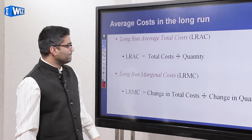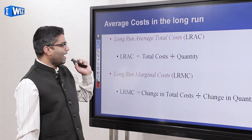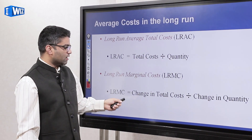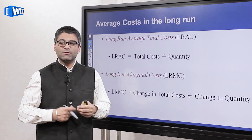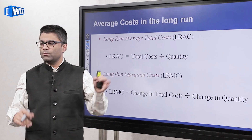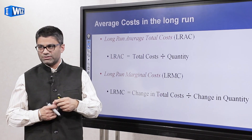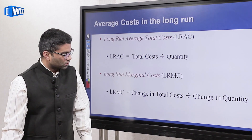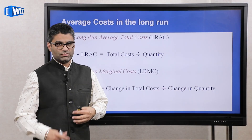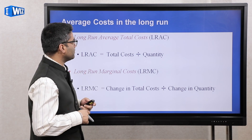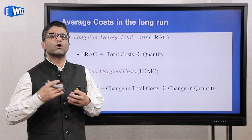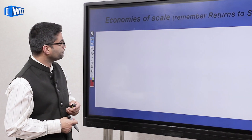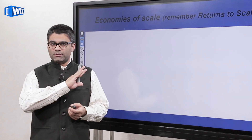A couple of definitions: the long run average cost is total cost divided by quantity, and the long run marginal cost equation is the same as before — change in total cost divided by change in quantity. The difference is that now we're in the long run, so we don't have any fixed costs and don't need to differentiate between fixed and variable. The equations are the same; we're just putting them in a long run context. Now let's talk about economies of scale.